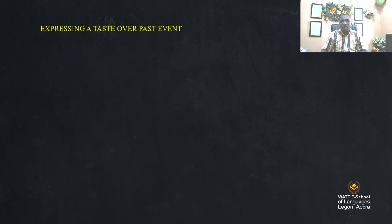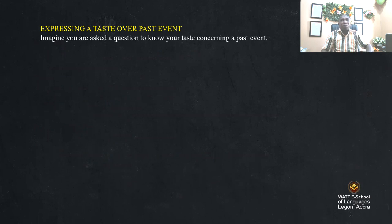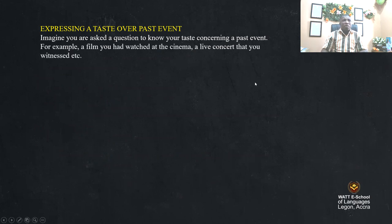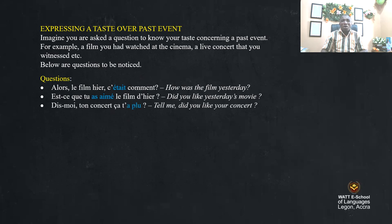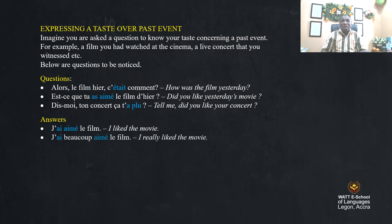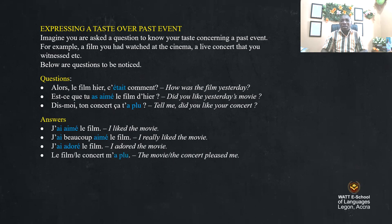Expressing a taste over past events. Imagine you are asked about a film you watched or a concert you attended. Questions include: 'Alors le film hier, c'était comment?' (How was the film yesterday?), 'Est-ce que tu aimais le film hier?' (Did you like yesterday's movie?). Answers use the past tense: 'j'ai aimé le film' (I liked the movie), 'j'ai beaucoup aimé le film' (I really liked the movie), 'j'ai adoré le film' (I adored the movie), 'le film m'a beaucoup plu' (the movie pleased me a lot).